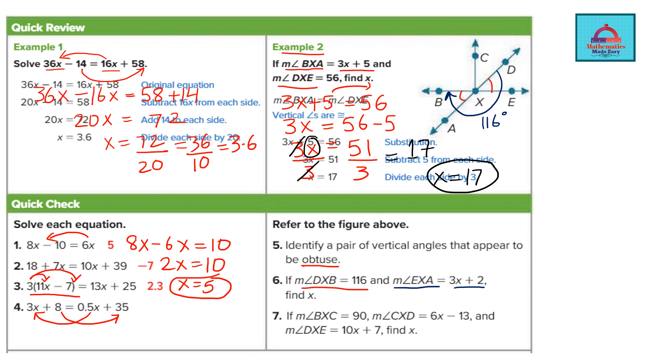For question 7 you have measure of angle BXC. BXC this is given to be 90 that you can see from the figure also. So it's a right angle. Angle CXD is given and angle DXE is given. You have to find x.